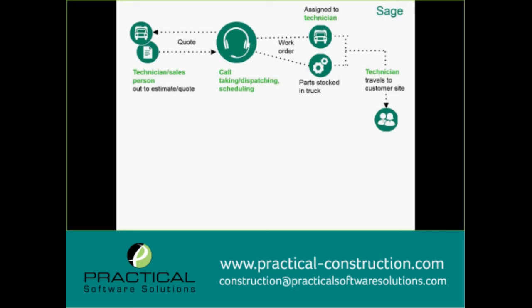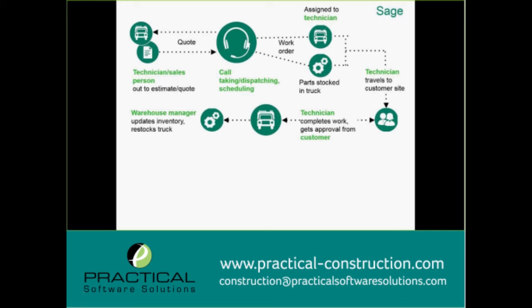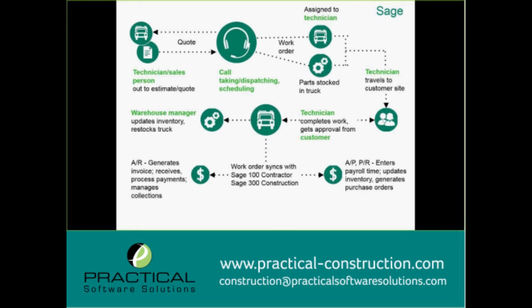As technicians travel to the site and complete their work, they fill out all the required information — what parts were used, truck inventory reductions, and new purchase orders if needed. They can then get approval from the customer: an official work ticket is pulled up on the tablet, and the customer signs off with a stylus or finger. That signature is automatically emailed to the office, letting them know the work ticket was just completed and prompting them to send out the bill.